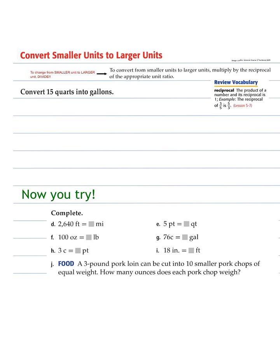So now we are converting from smaller units into our larger units. In order to do that, to change from smaller units to larger units, we divide. We take, to convert from smaller units to larger units, multiply by the reciprocal of the appropriate unit ratio. So what exactly does that mean? Convert 15 quarts into gallons. So first, let's note that one gallon equals four quarts. So the unit ratio for that would be four quarts over one gallon.